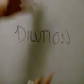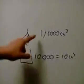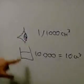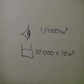And finally, dilution. Suppose the smallest droplet you can see is one in 1000 cubic centimeters, and that there are 10,000 drops in this beaker which is 10 cubic centimeters.